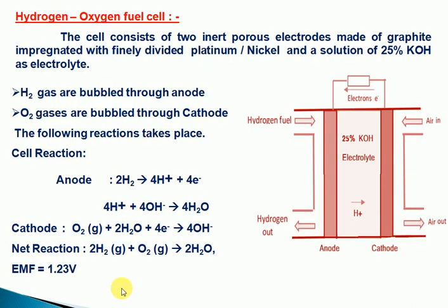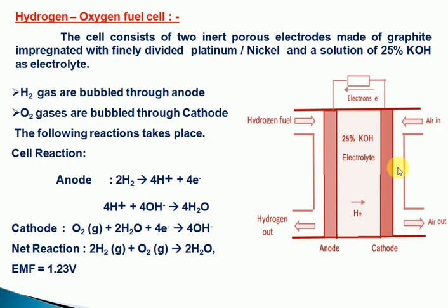Today we discuss the hydrogen oxygen fuel cell construction. The cell consists of two inner porous electrodes — one is the anode and the other is the cathode. These are made up of highly porous, finely divided platinum or nickel catalyst mixed with the electrode material. 25% potassium hydroxide (KOH) is used as the electrolyte.